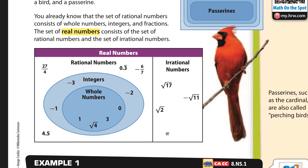What we have is our diagram. You may already know that sets of rational numbers consist of whole numbers, integers, and fractions. And the set of real numbers consists of rational numbers and irrational numbers.